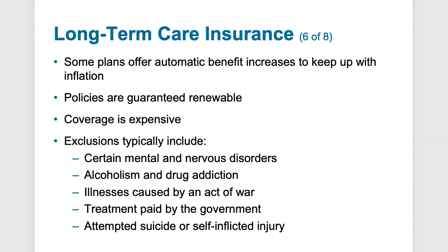Most insurers offer non-forfeiture benefits — an optional benefit providing some value if the policy lapses. Examples include return of premium or a shortened benefit period. Under a return-of-premium benefit, the policyholder receives cash as a percentage of total premiums paid if the policy lapses or death occurs. Under a shortened benefit, coverage continues but the benefit period or maximum dollar amount is reduced. Some states also require a contingent non-forfeiture benefit upon policy lapse, giving the policyholder options such as reduced daily benefits or converting to a shortened duration of benefits.